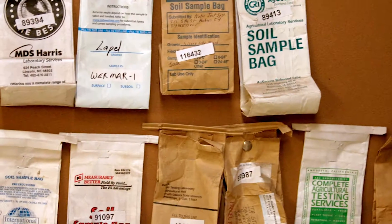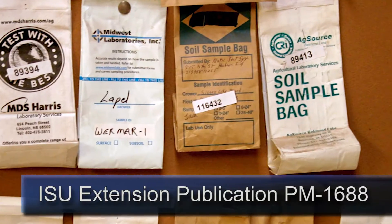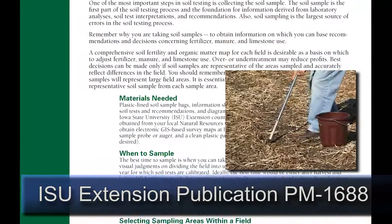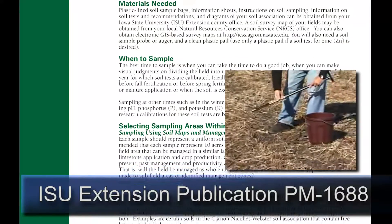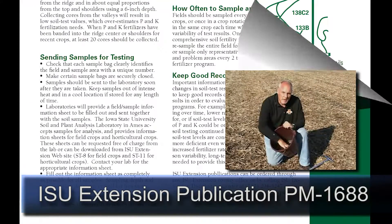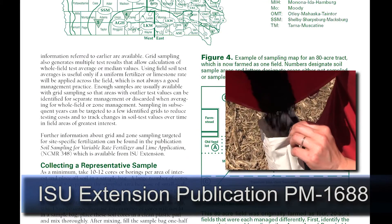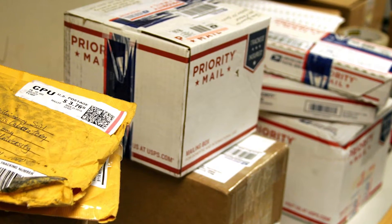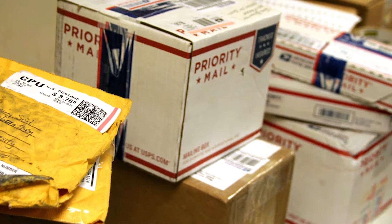The first step in the process is to ensure that a proper soil sample is obtained. Most soil testing laboratories have printed materials on how to obtain a good representative soil sample. After the sample has been received, the laboratory will follow these steps in handling the sample.